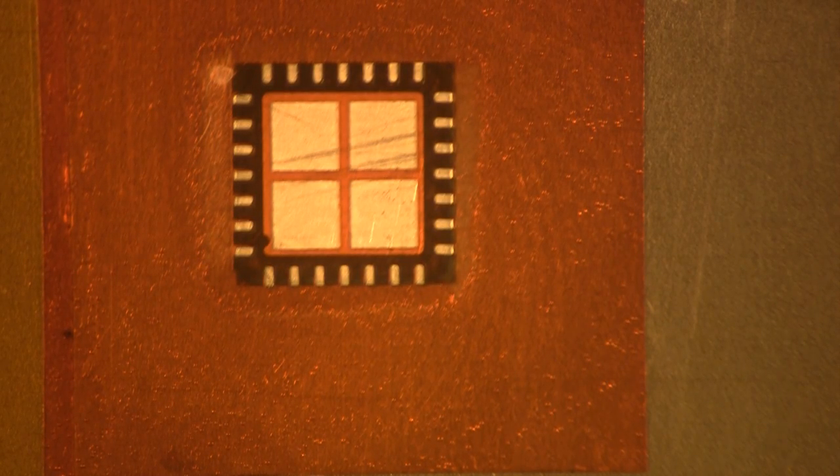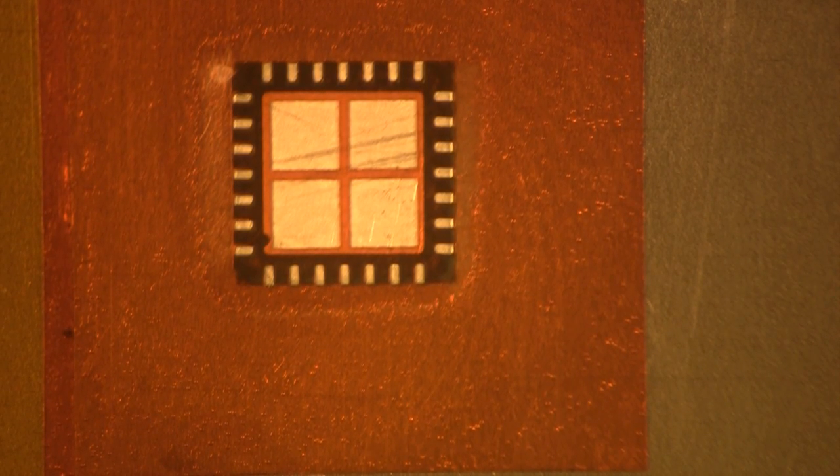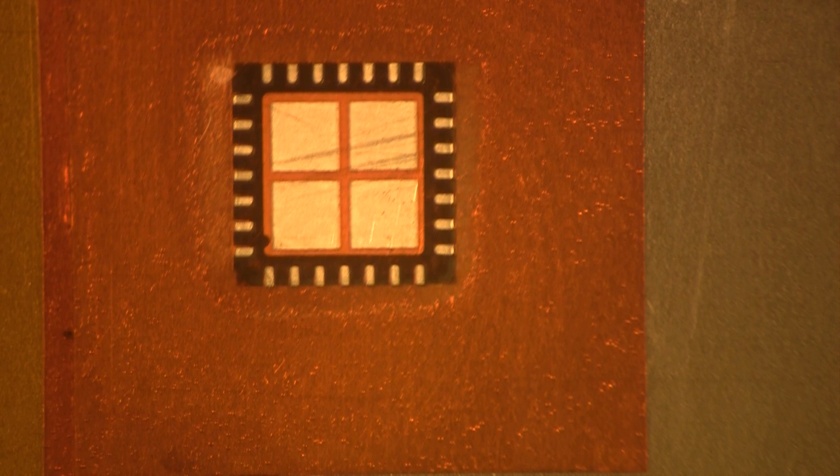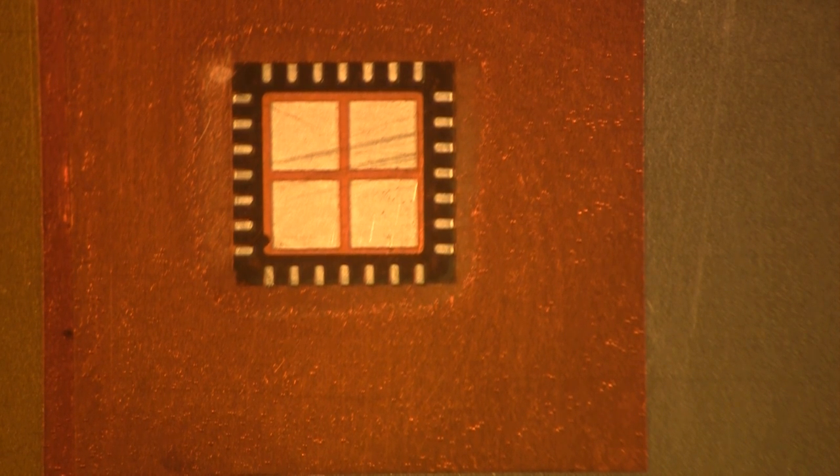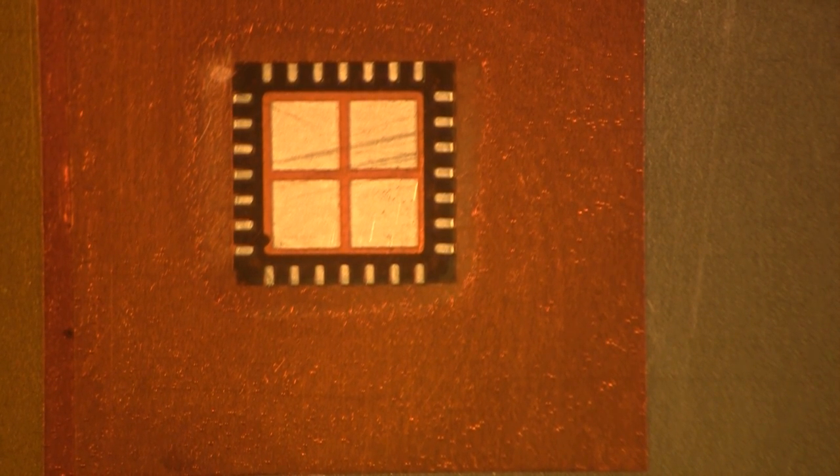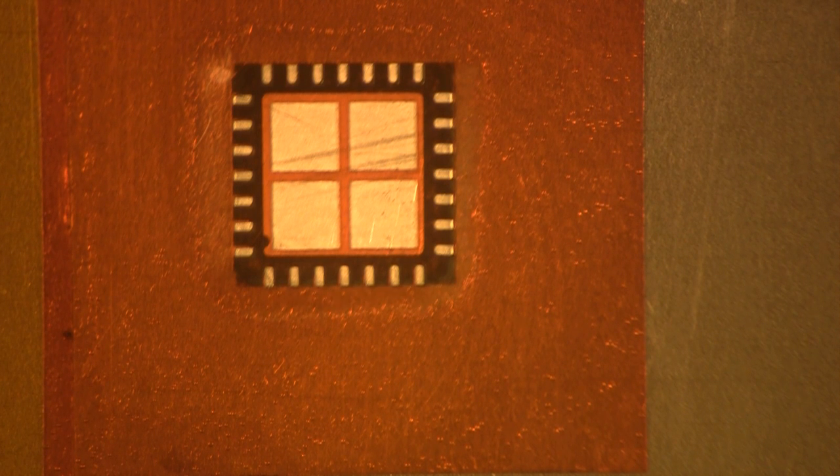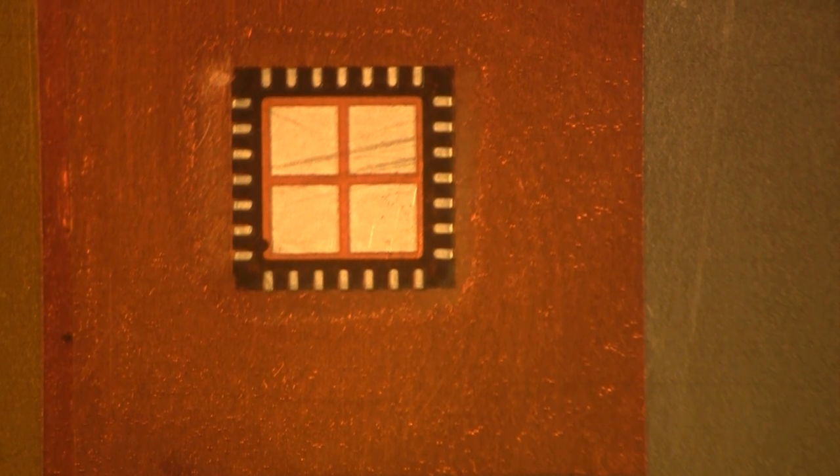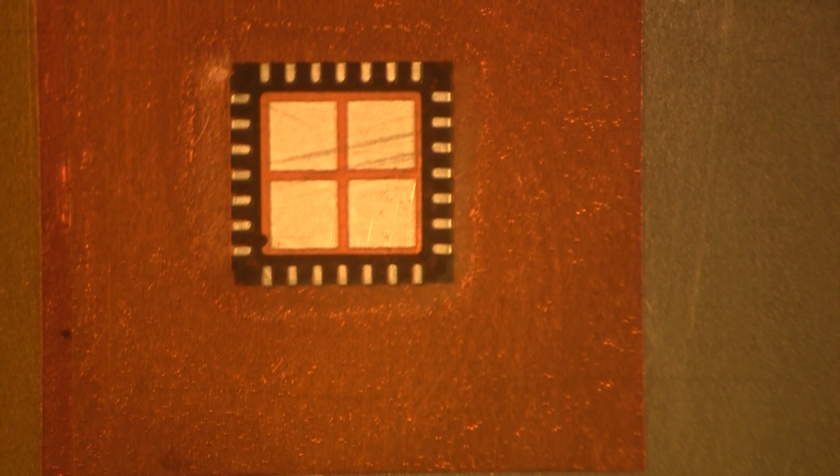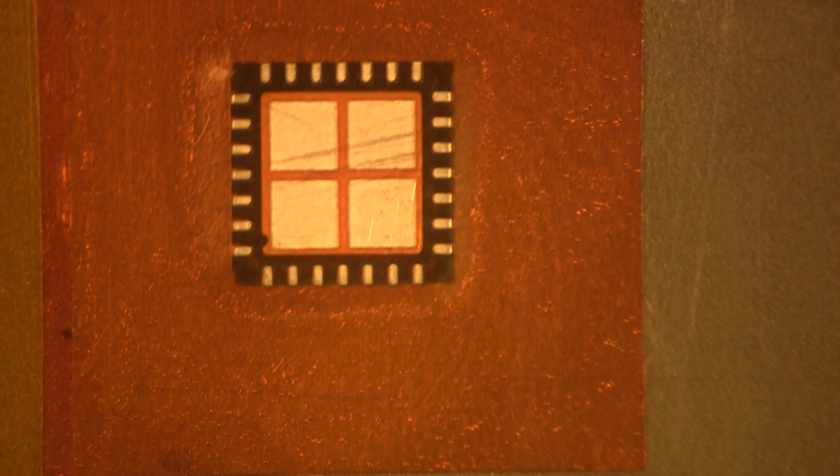Next thing you're going to do is you're going to squeegee some solder paste into the apertures. Now one thing you want to remember about the solder paste: you want to keep it cool so you get a thicker viscosity. In other words that way it can actually go into the holes a little bit easier. Just squeeze it in there. Just something like that really quick.